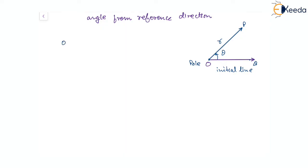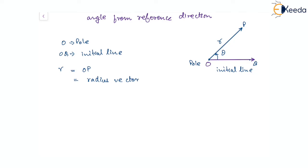So O is the pole and OQ is the reference direction, which is the initial line. The distance R, which is the length OP, is named the radius vector, and the angle POQ equal to theta is called the vectorial angle.